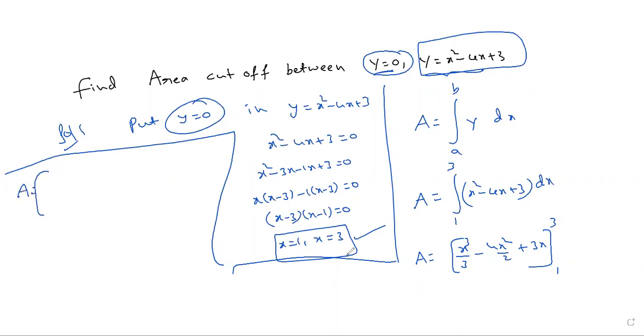Upper minus lower. Substitute to get the answer. Let's start. x is 3, 3 cubed is 27, 27 by 3 is 9, minus 4 by 2 is 2, 2 into 9 is 18, plus 3 into 3 is 9. Correct? 3 squared is 9, 4 by 2 is 2, 2 into 9 is 18. Minus, substitute 1: 1 by 3, minus 4 by 2 is 2, plus 3. Close.